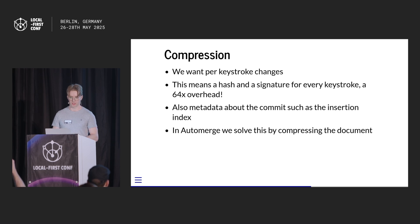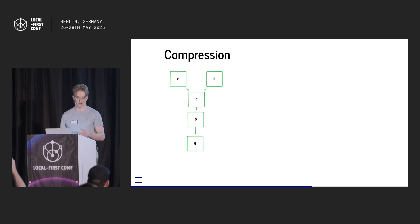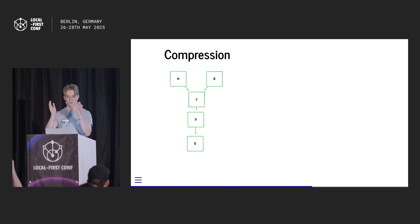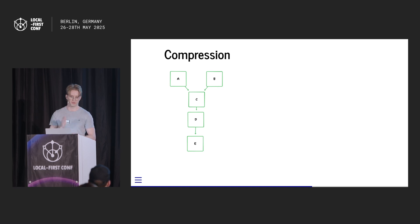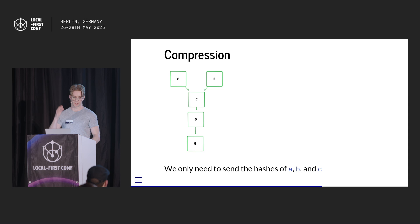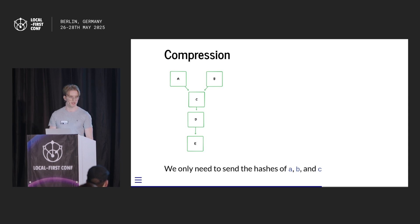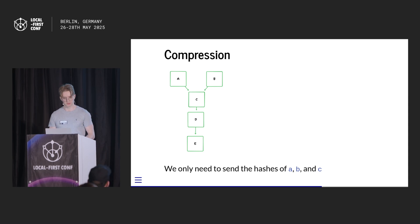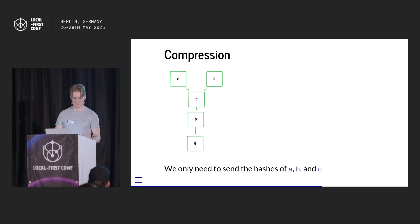In automerge, we solve this by compressing the document. Automerge documents are typically very long with very occasional concurrency, because most of the time changes are sequential. So we don't need to send all the hashes — we can just send the start and end hashes and regenerate the intermediate ones. We can also run-length encode a lot of the content, ending up with about a 10% overhead on the metadata. That makes automerge and similar systems plausible and feasible — we don't have to download giant amounts of data every time we sync.